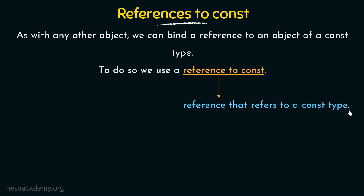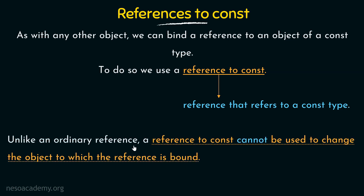Here is a very important thing to keep in mind about references to const. Unlike an ordinary reference, a reference to const cannot be used to change the object to which the reference is bound. When we studied about normal references, we saw that once we bind a reference to a particular object, changing the reference also changed the value of the bound object. But in case of references to const, that cannot be done. This is a very important difference between the ordinary reference and a reference to const.